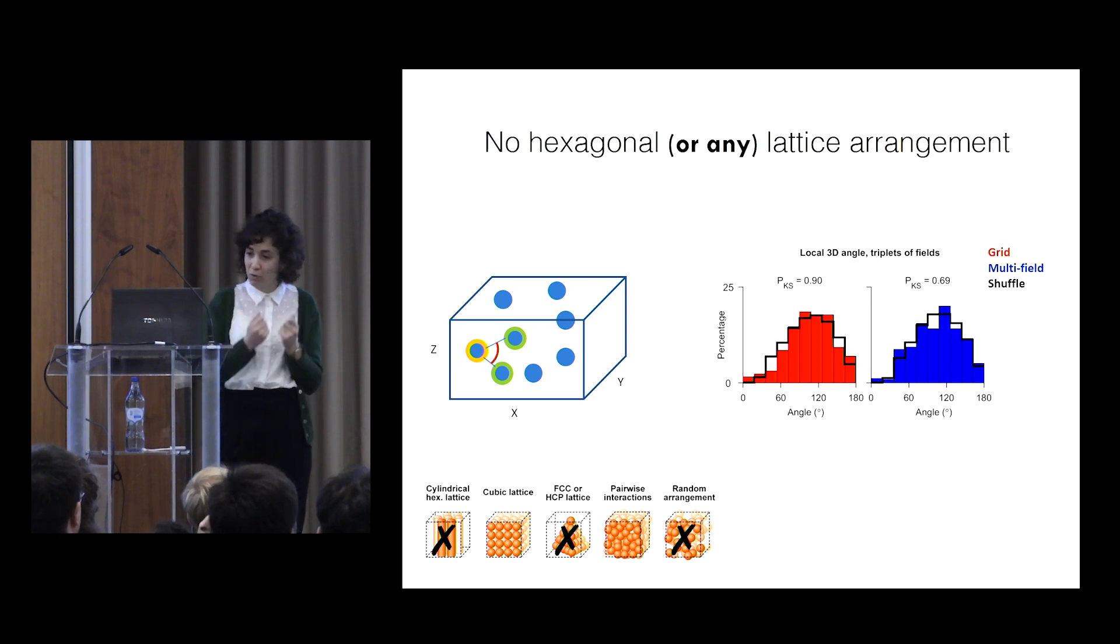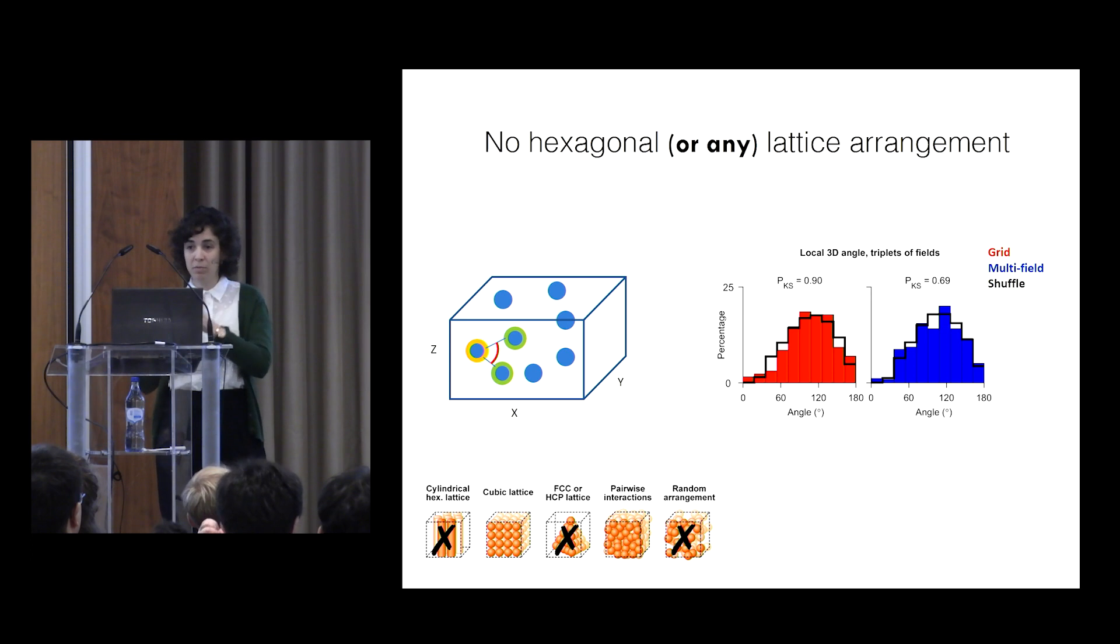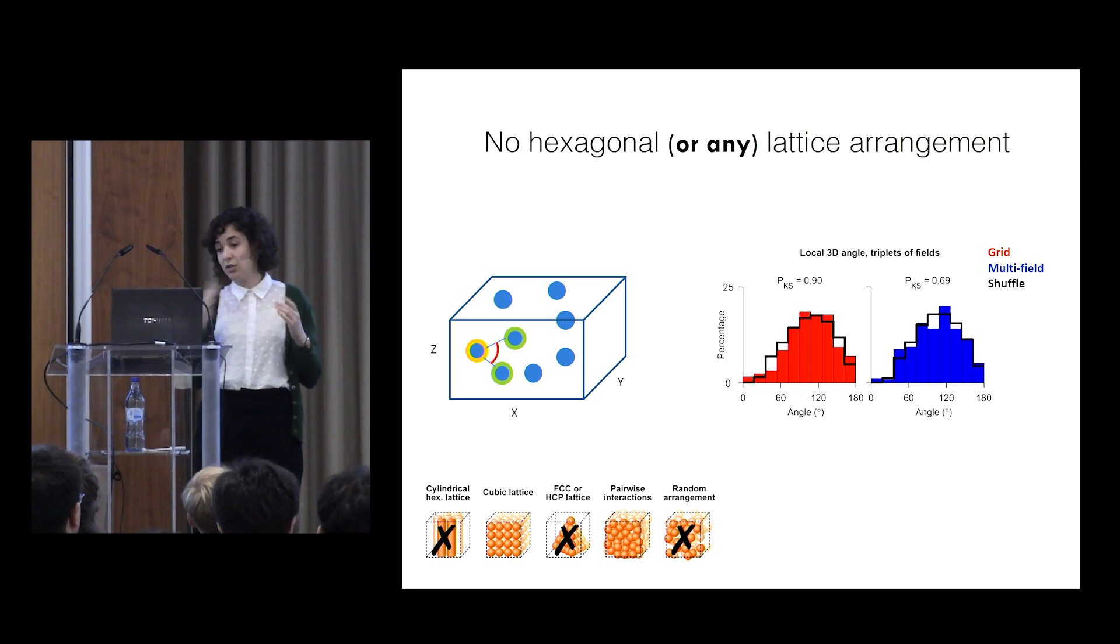and we see no such bias. So both for the grid cells, for the locally ordered cells in red, and for the rest of the multiple field cells in blue,